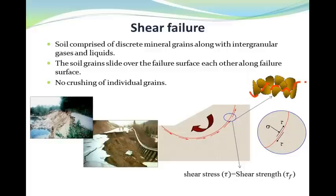We know that soil is a material comprised of discrete mineral grains and decayed organic matter along with intergranular gases and liquids. As shown here, when the shear stress along this surface reaches the shear strength of the soil, failure happens. In case of a shear failure, the soil grains slide over each other along the failure surface, and crushing of grains won't occur if the soil is not consolidated. Actually, these two photos are examples of shear failure due to landslide phenomenon.